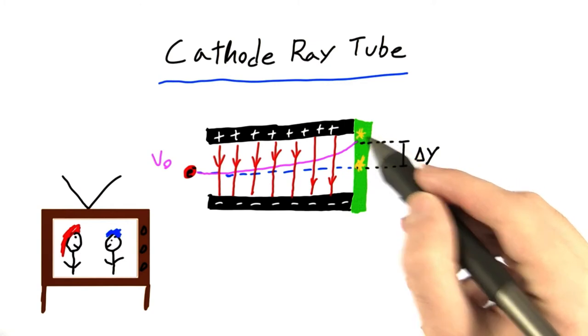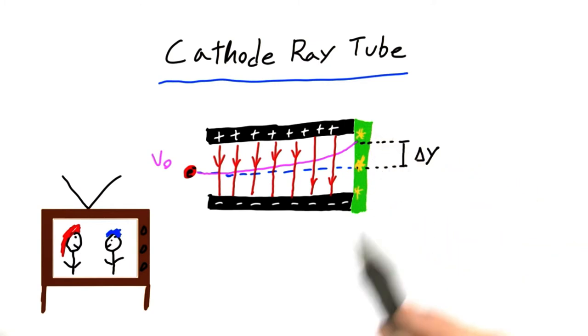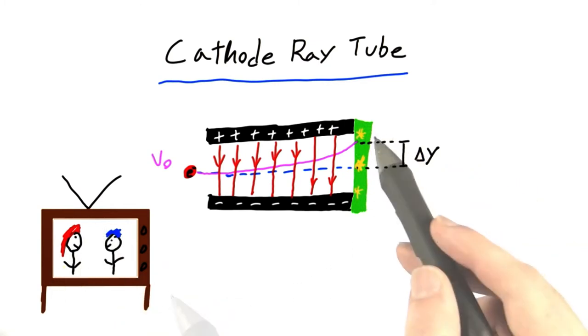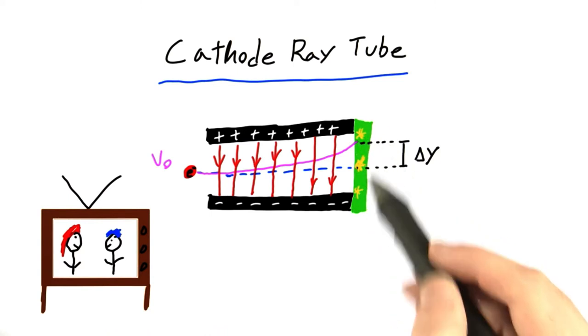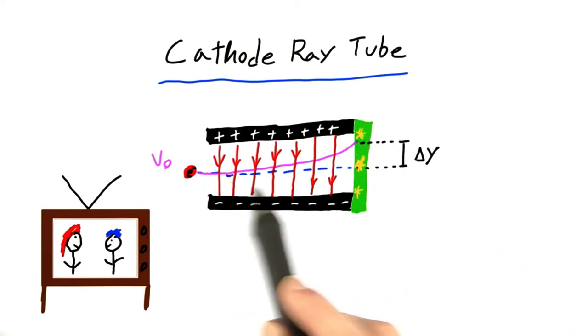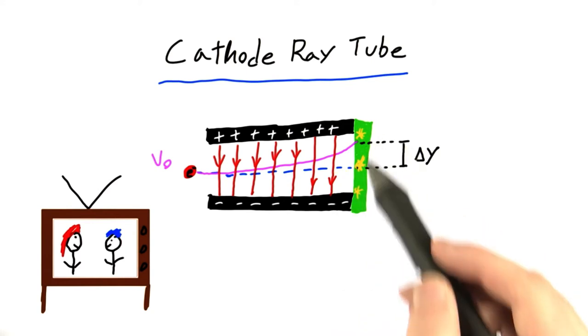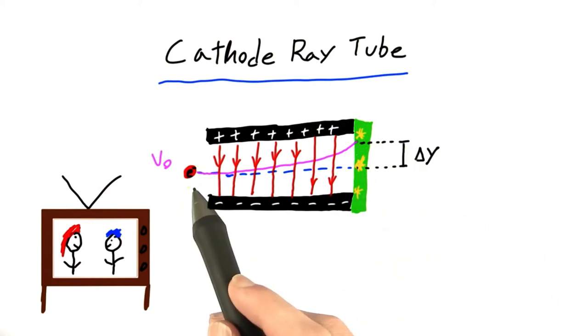Now you can imagine if we were able to draw lots of these dots on the screen, we could use it to draw images, like this one here. But in order for us to be able to make dots on other parts of the screen, we have to bend the path of the electron so it doesn't just go in a straight line. And how can we bend the path of an electron?